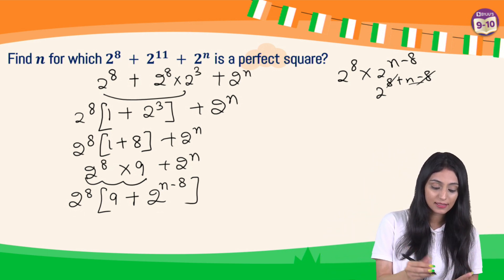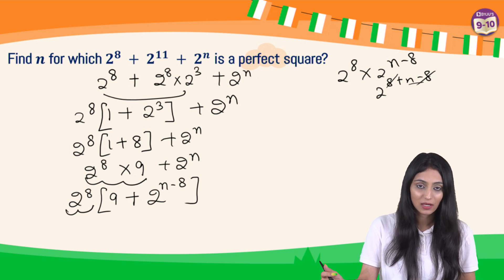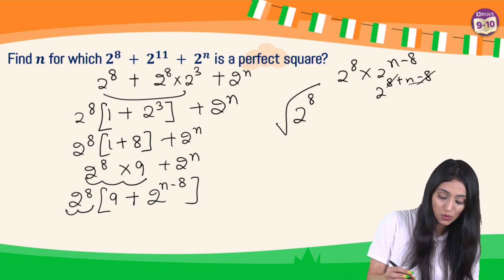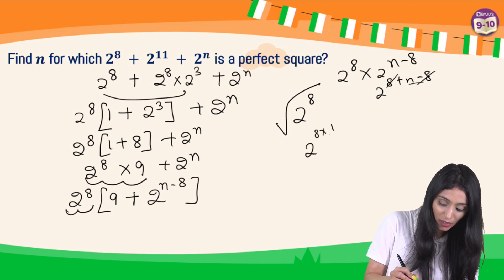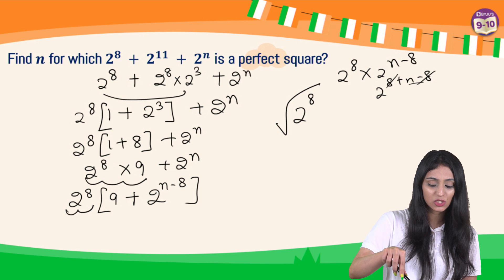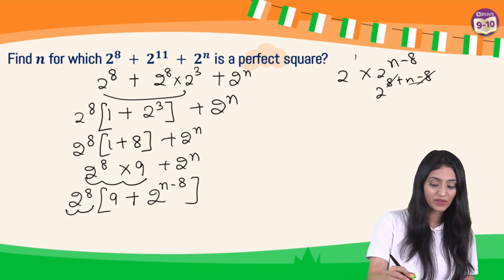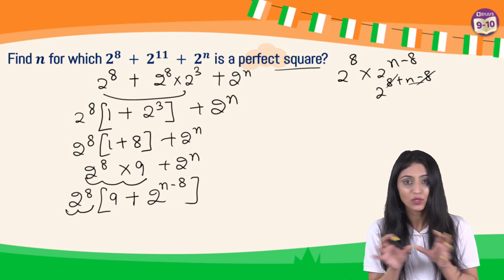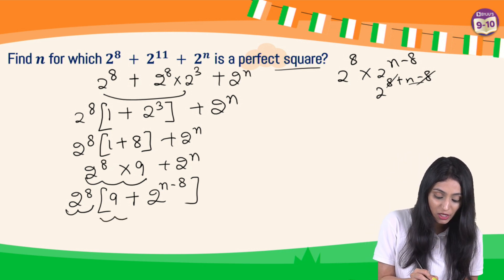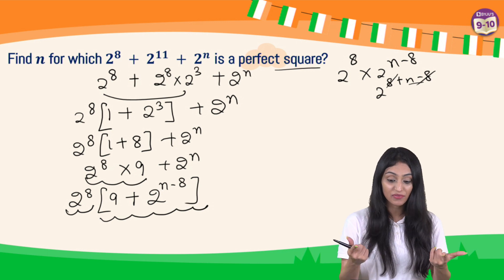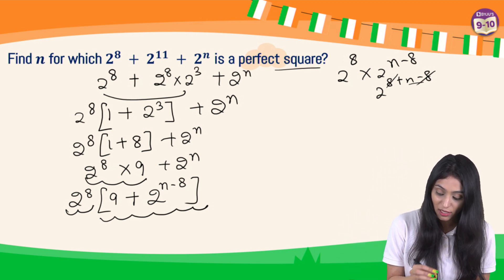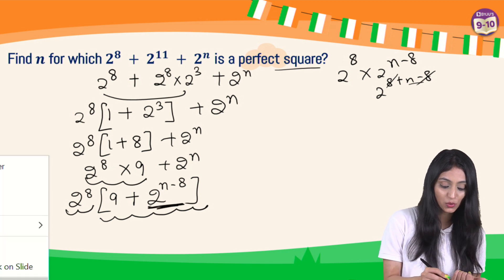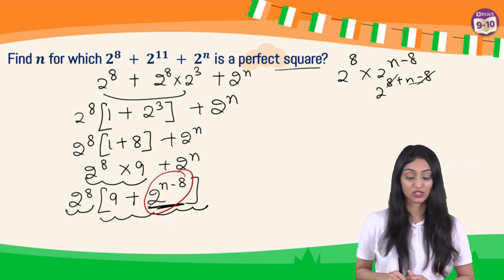Now this is anyways 2 to the power 8. It is a perfect square, right. Why is it a perfect square? Let's put a root here. Square root means what? It has power 1 by 2. We can cancel it out, correct. We are getting 16, 2 to the power 4, which is a perfect square anyways. What about this? Question is saying it is a perfect square. We don't have to check it here. That means it has to be a perfect square. So if this is a perfect square, that means 9 over here. We know that 9 is a perfect square. Now we are only left with this term, 2 to the power n minus 8. This has to be a perfect square.